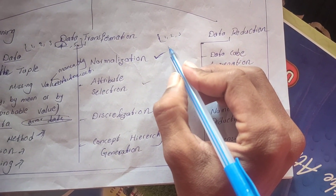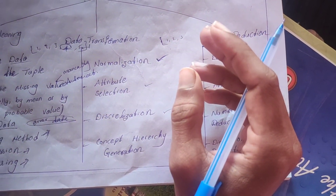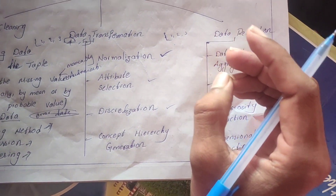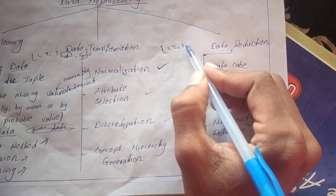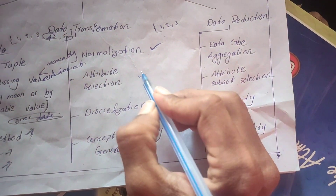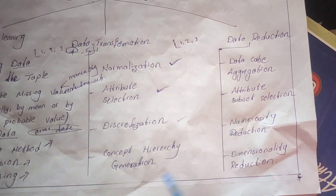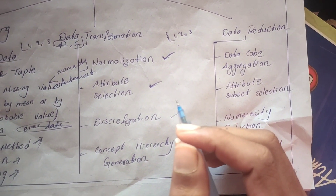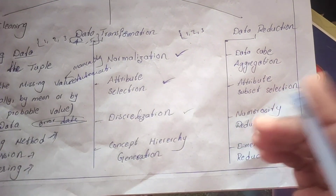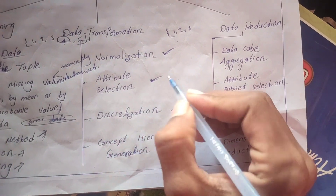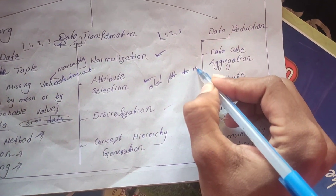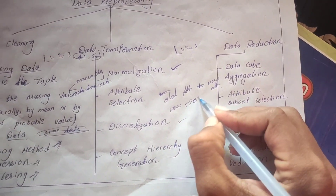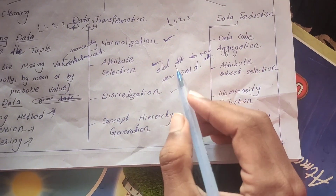You cannot normalize data in the form of alphabets or words like 'apple' or 'ball' — only numeric data can be converted into a specific range. In attribute selection, older attributes are converted into new attributes, or new attributes are derived from all older attributes.